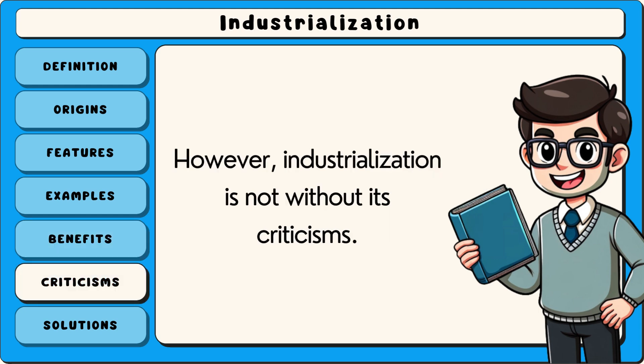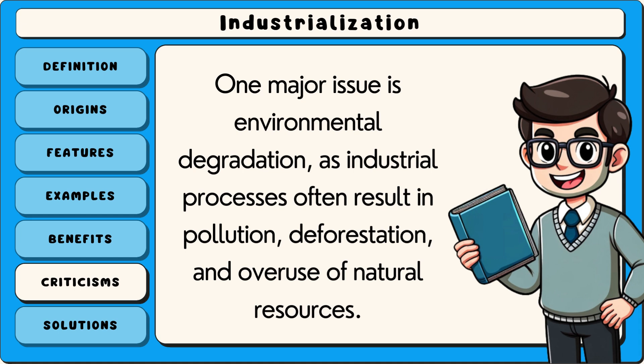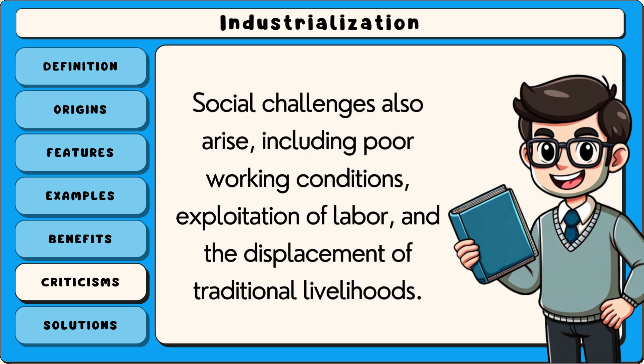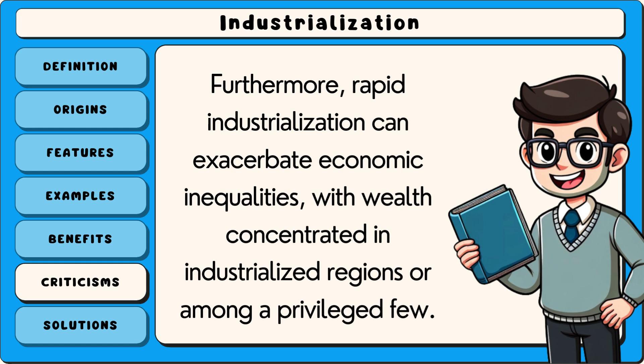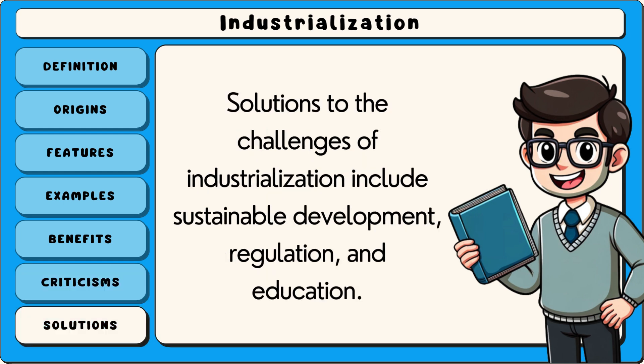However, industrialisation is not without its criticisms. One major issue is environmental degradation, as industrial processes often result in pollution, deforestation and overuse of natural resources. Social challenges also arise, including poor working conditions, exploitation of labour and the displacement of traditional livelihoods. Furthermore, rapid industrialisation can exacerbate economic inequalities, with wealth concentrated in industrialised regions or among a privileged few.